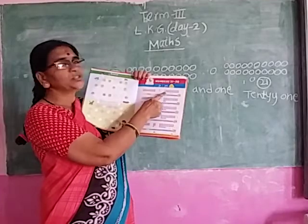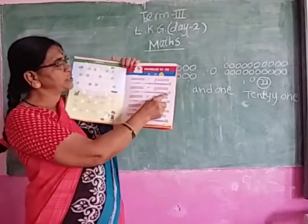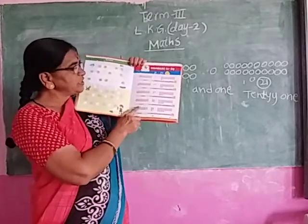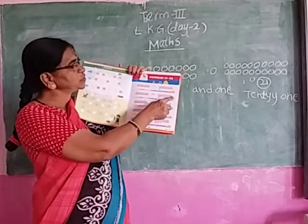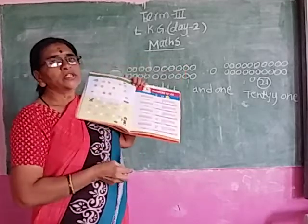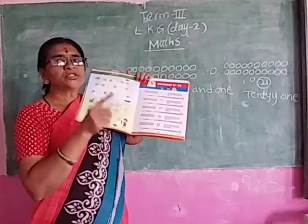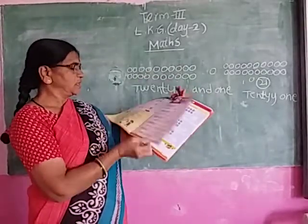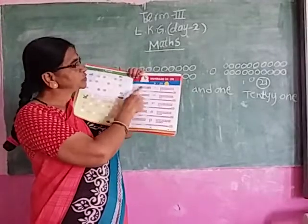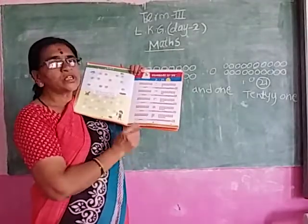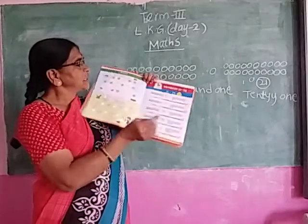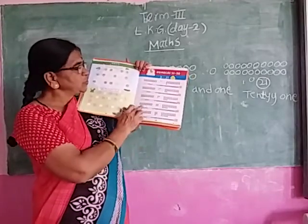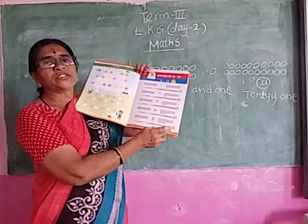20 and 1 — 21. 20 and 2 — 22. 20 and 3 — 23. 20 and 4 — 24. 20 and 5 — 25. 21, 22, 23, 24, 25. Today what did we learn? 21 to 25. Okay? Shall I say one more time? 20 and 1 — 21. 20 and 2 — 22. 20 and 3 — 23. 20 and 4 — 24. 20 and 5 — 25.